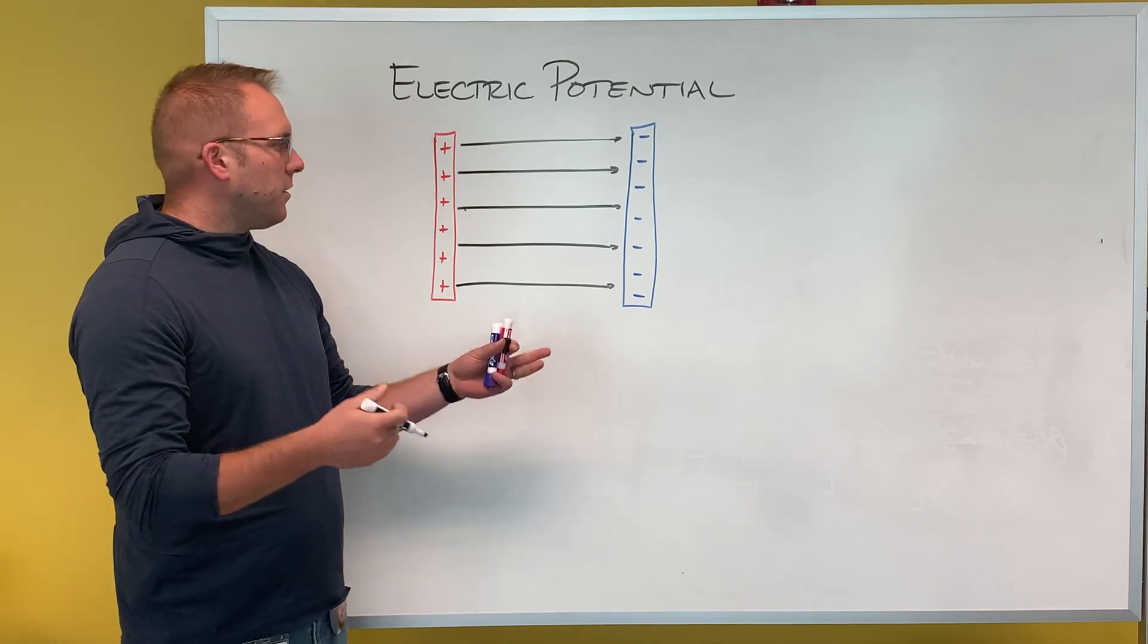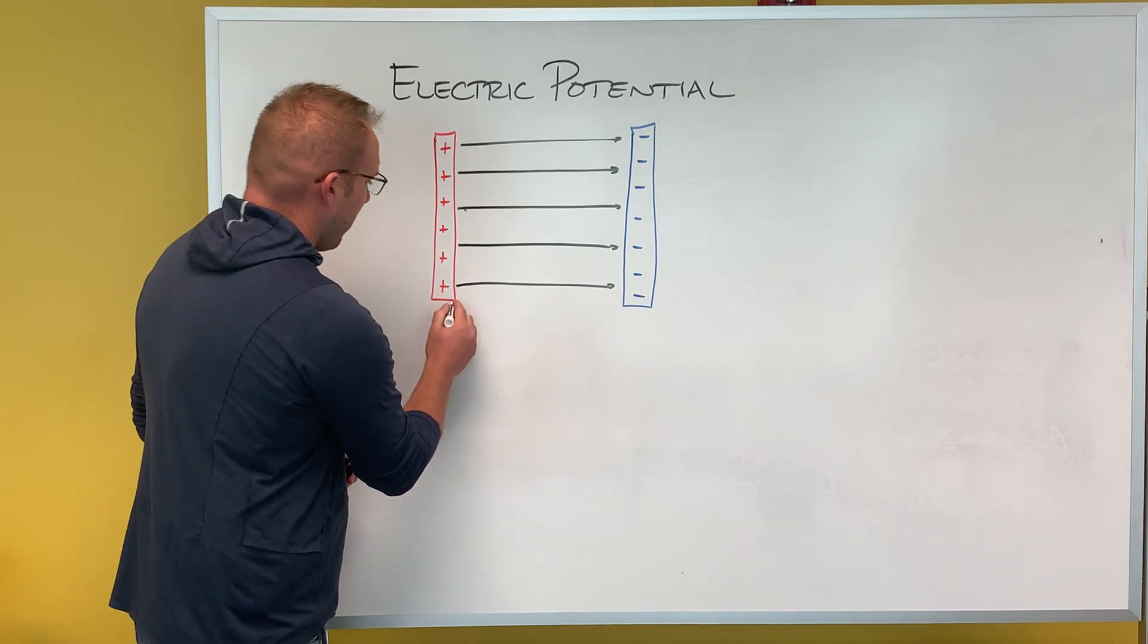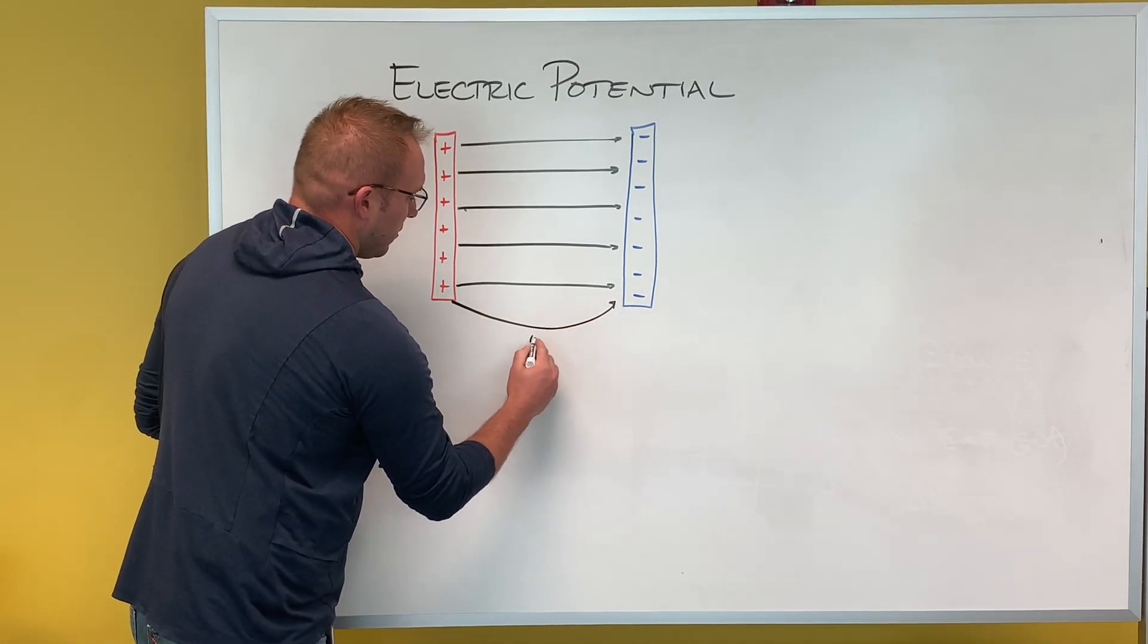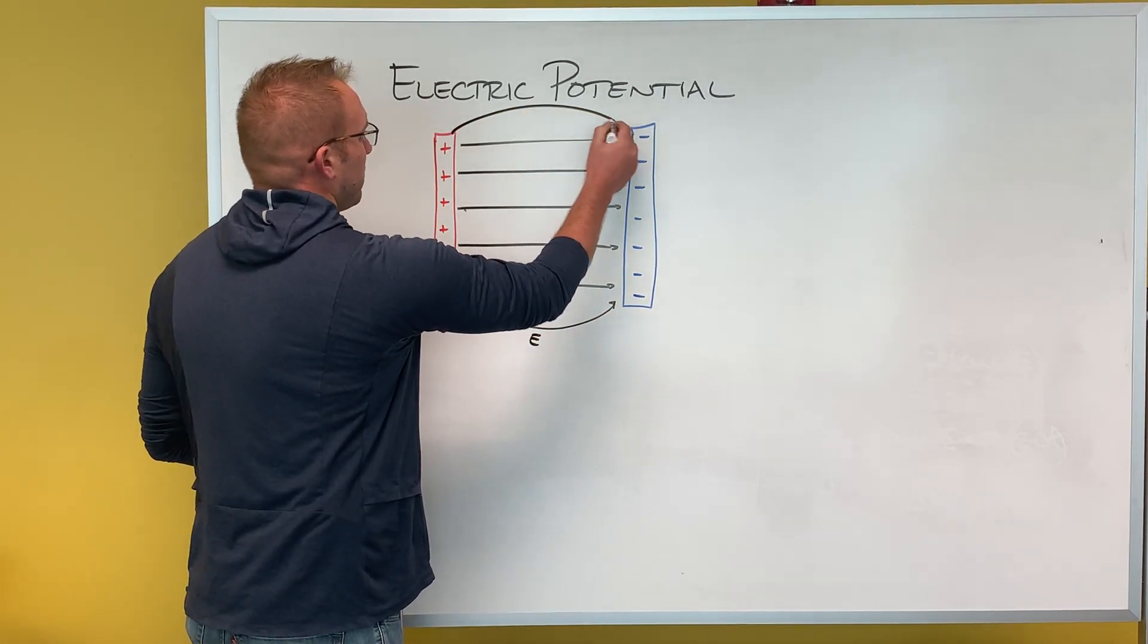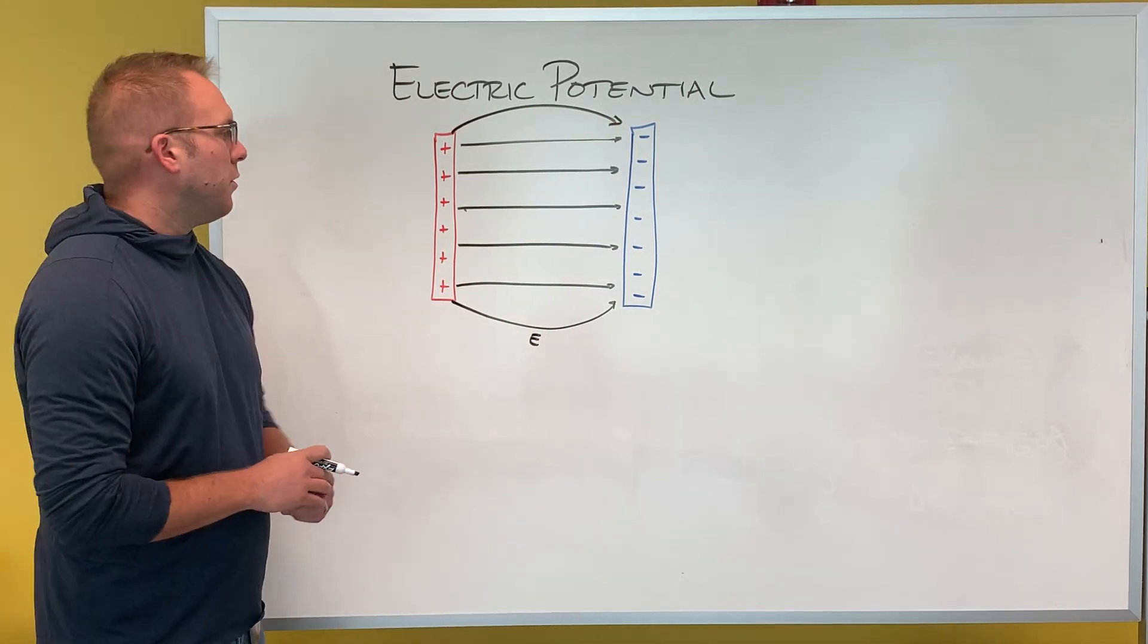So the density of my field lines stays the same to show that the electric field is constant. You might have a little bit of fringe field here on the ends, but for the most part our electric field is constant when you're within those two plates.